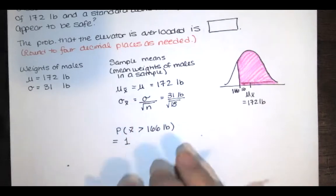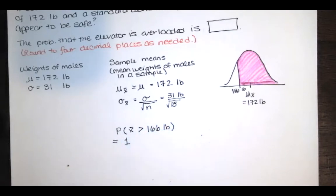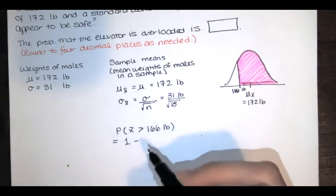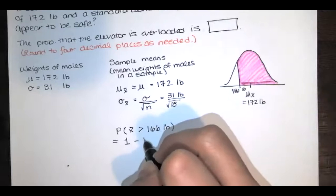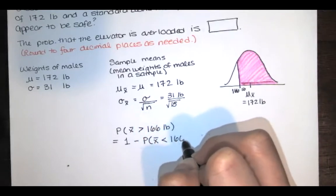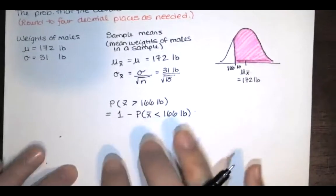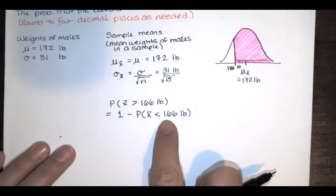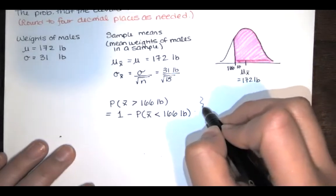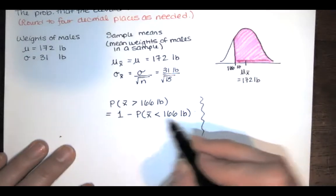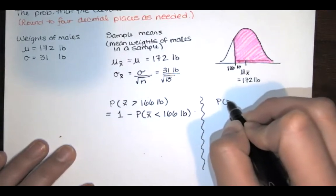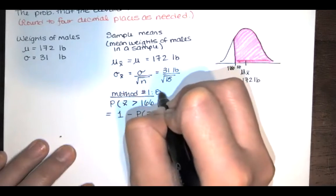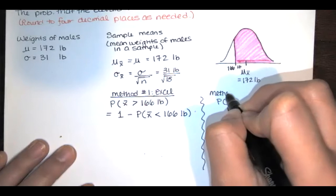We want the area to the right of 166 pounds, but Excel and Table A2 always give the area to the left. So if we want the area to the right, we have to subtract the area to the left from 1. We can do this two ways: method one using Excel, which will be slightly more accurate, or method two by converting to a corresponding z-score and using Table A2.